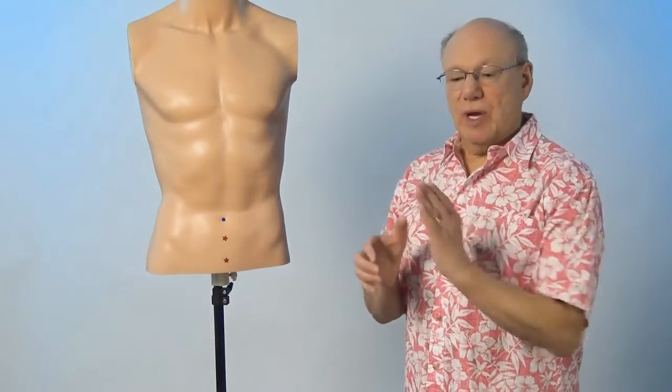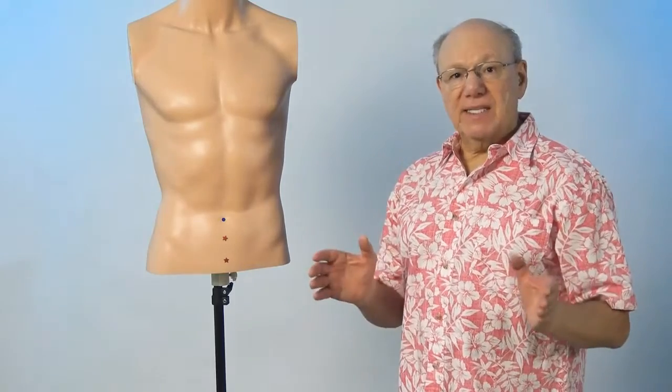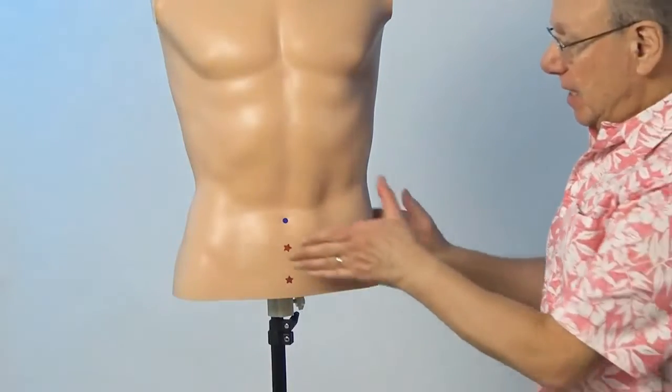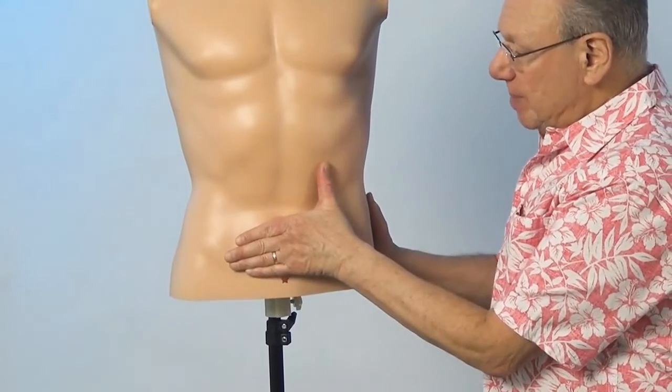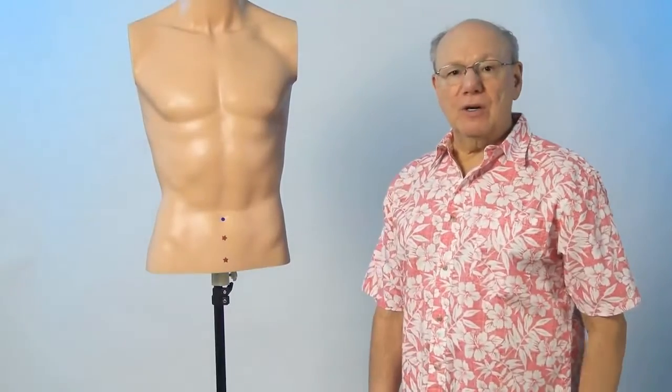Conception Vessel 3 is located the width of one hand below your belly button. To find Conception Vessel 3, put your hand just under your belly button and find the point that is just below your small finger.